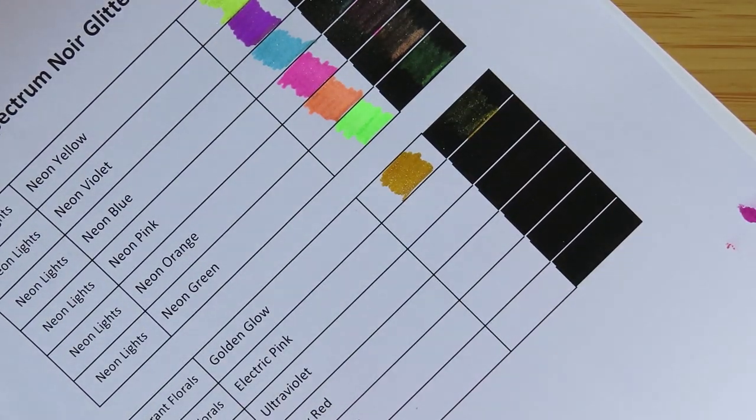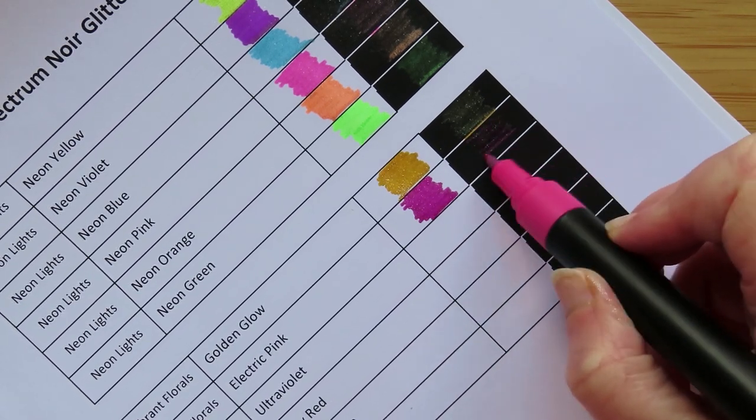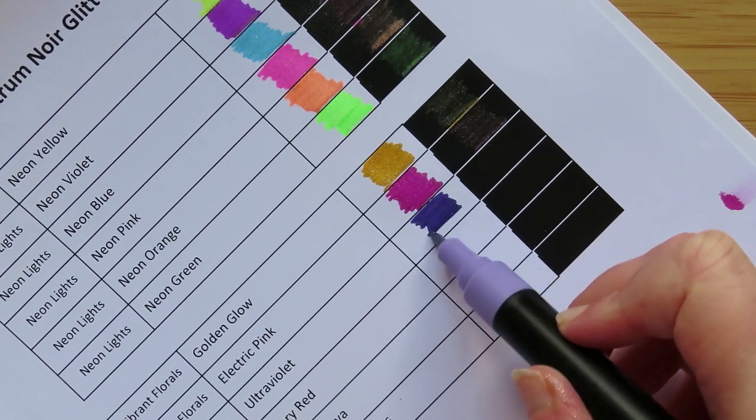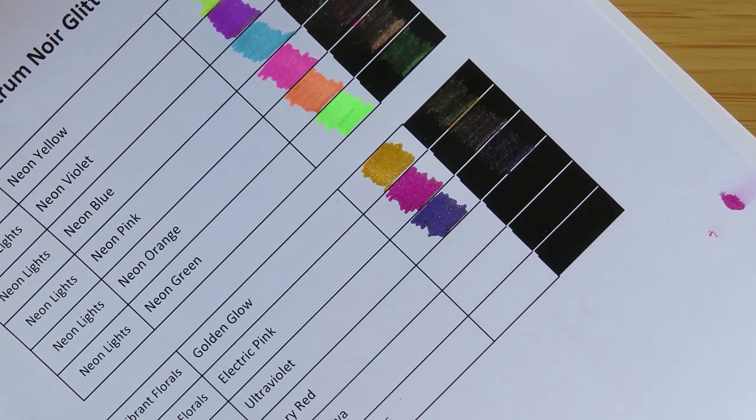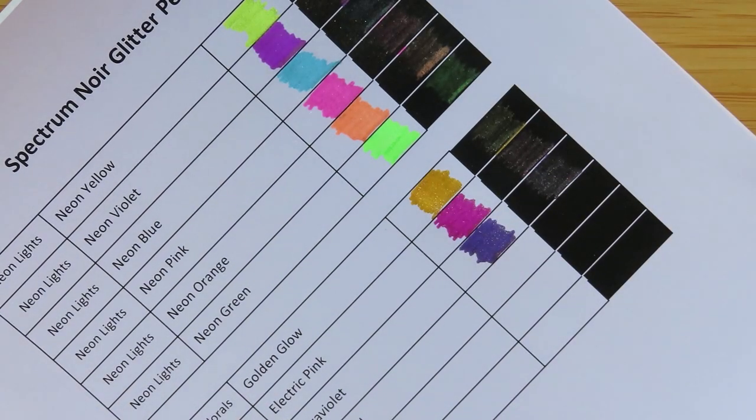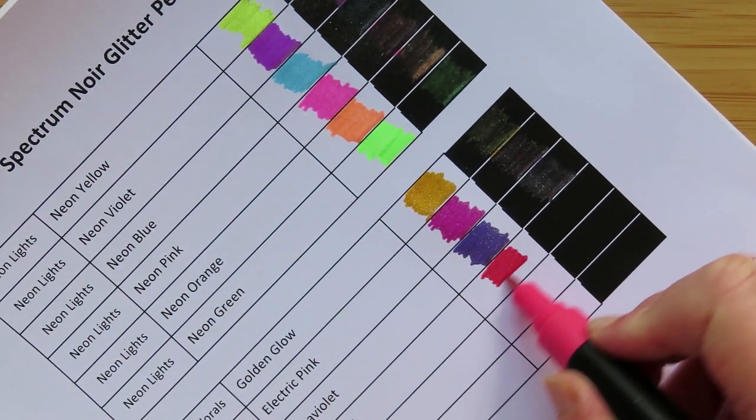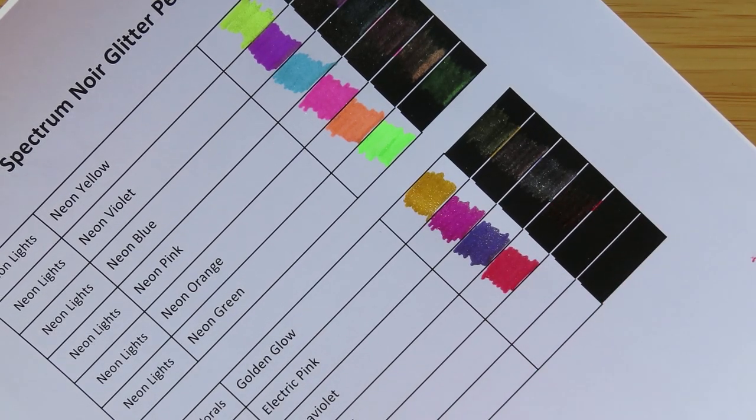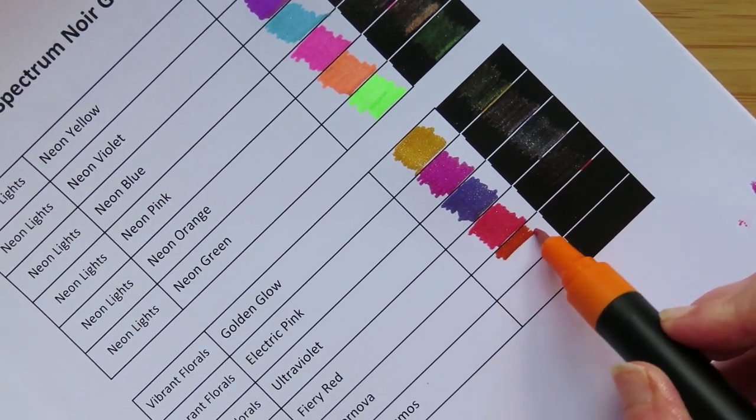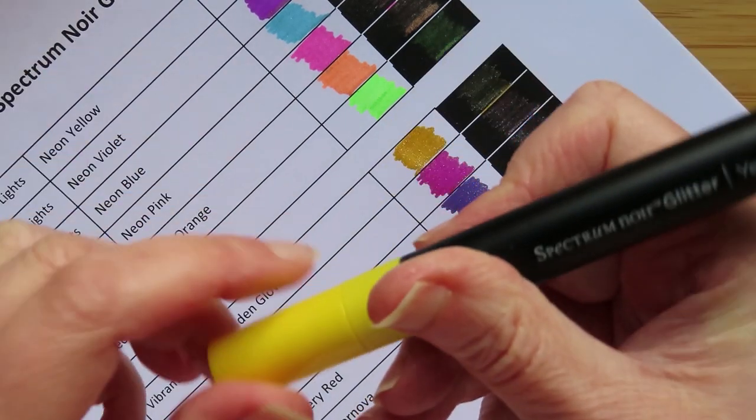That is golden. Now we're doing Electric Pink. It's a real magenta pink that. Here we have Ultraviolet. They're not designed to go on black paper. Oh, look at them, glitter me glittery. This one is Fiery Red. It's got a very coral looking top.